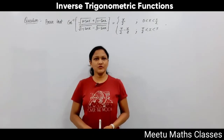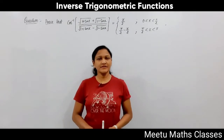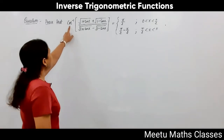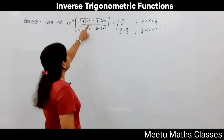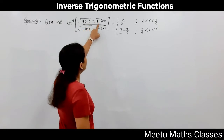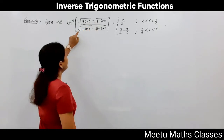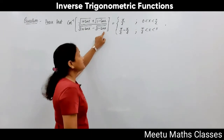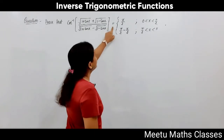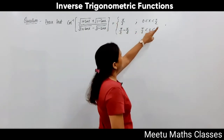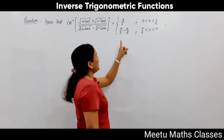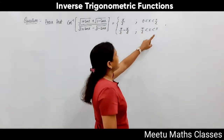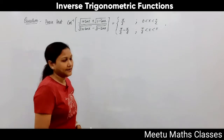Hello students, welcome to maths classes. Your question is: prove that cot⁻¹ of [√(1+sinx) + √(1-sinx)] / [√(1+sinx) - √(1-sinx)] equals x/2 when x lies between 0 to π/2, and equals π/2 - x/2 when x lies between π/2 to π.